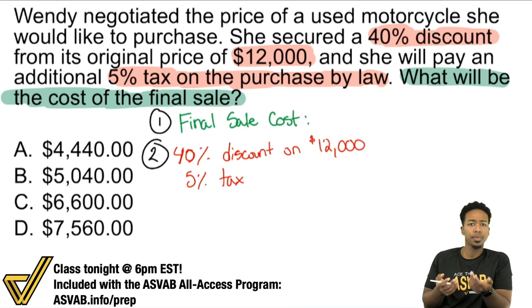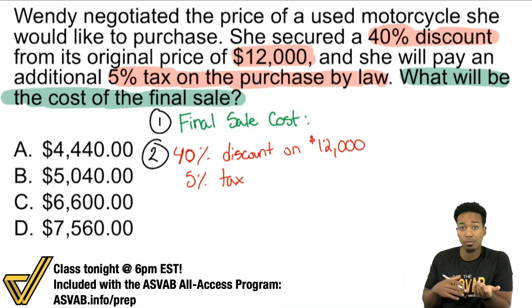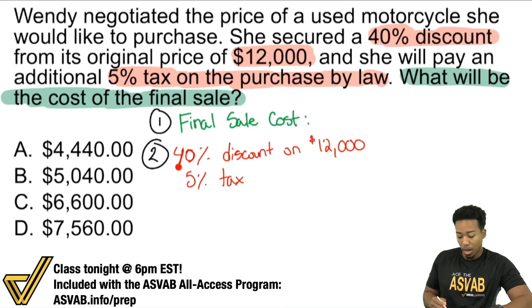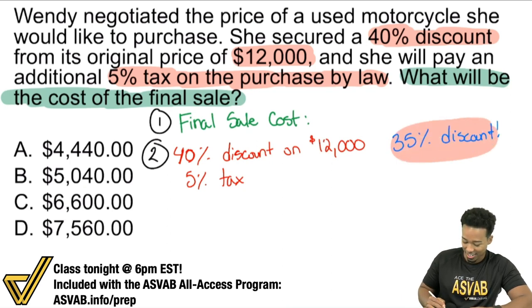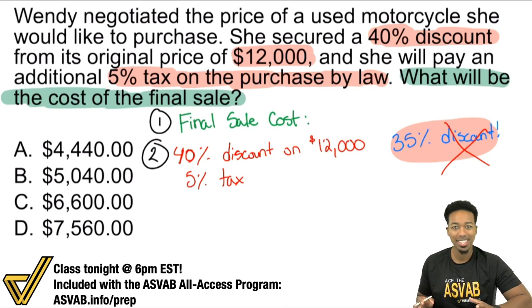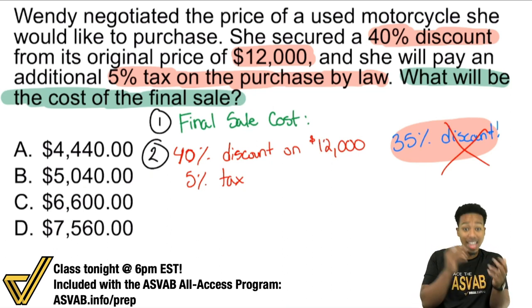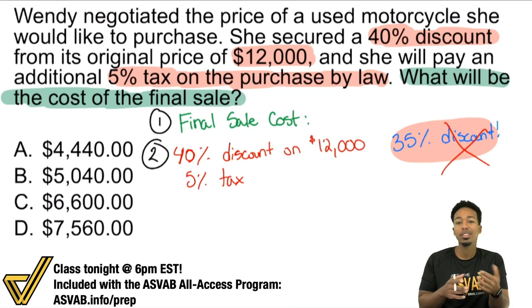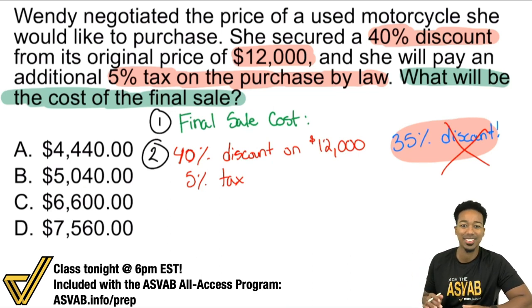This is a classic example of a problem that might give people trouble. All you have to do is apply the discount and then the tax — or the tax first, then the discount. The order really doesn't matter, but you've got to make sure you don't make this one mistake. A lot of people assume that a 40% discount with a 5% tax leads to a 35% discount. That is wrong. When you have a discount and a tax, you are multiplying to find the discount, then multiplying again to find the tax — they are separate. Do not mix those percentages together. That is the easiest way to get it wrong.